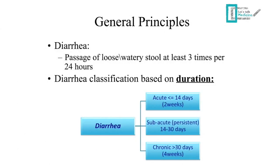Let's start with general principles. The definition of diarrhea: diarrhea is the passage of loose, watery stool at least three times per day. Another definition is passing more stool than usual. Diarrhea is classified based on duration into acute, subacute, and chronic.